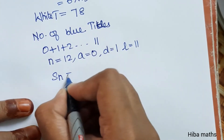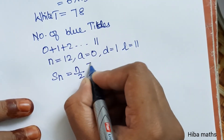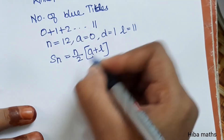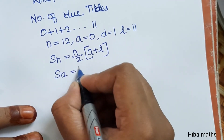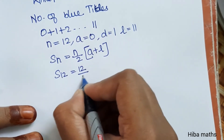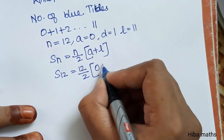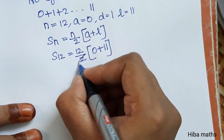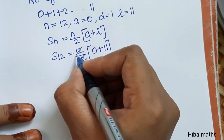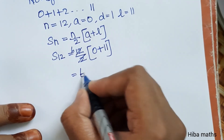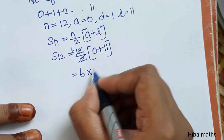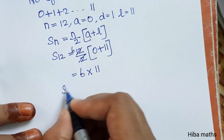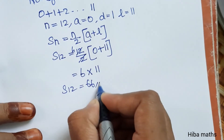S of n is equal to the same formula: n by 2 times (a plus l). So S of 12 equals 12 by 2 times (0 plus 11), which is 6 times 11, giving 66. So S of 12 is 66 blue tiles.